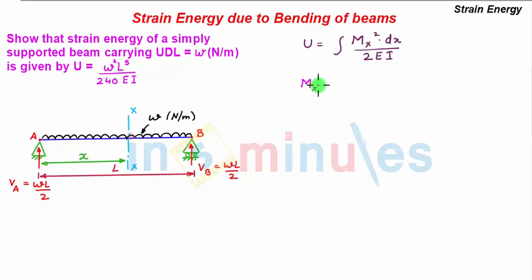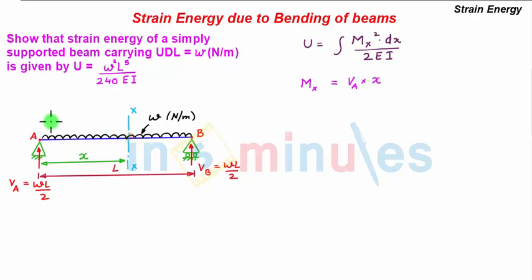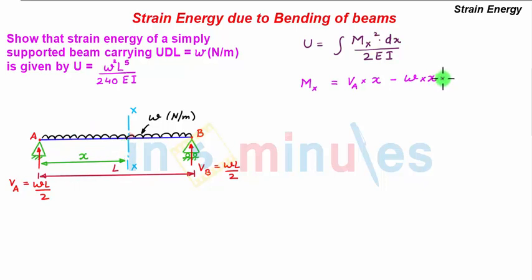Bending moment about section XX considering the left hand side will be given as Mx. On the left hand side we have a clockwise moment caused by the upward vertical support reaction VA acting at a distance x from this section, giving VA·x. We also have an anti-clockwise moment due to the downward UDL of intensity W Newton per meter acting over a span of x, so W·x is the magnitude of this UDL on the left hand side, acting at its center at a distance x/2 from section XX, giving x/2.